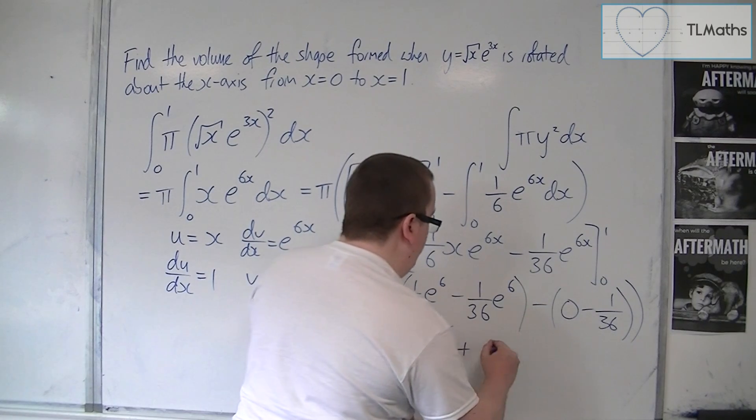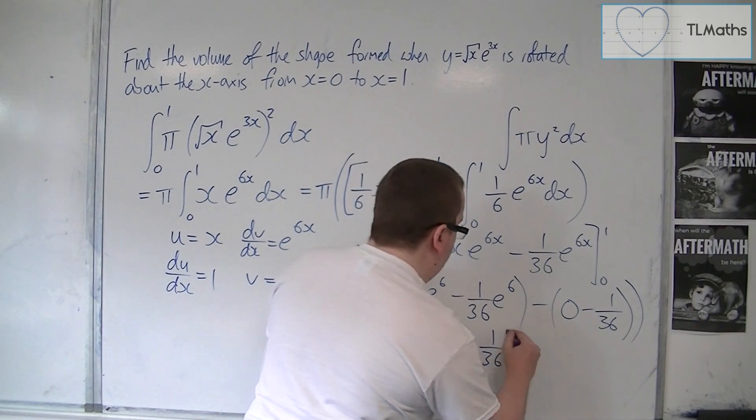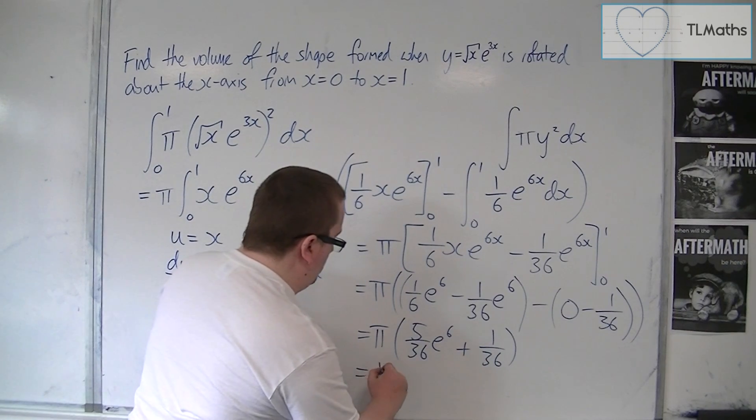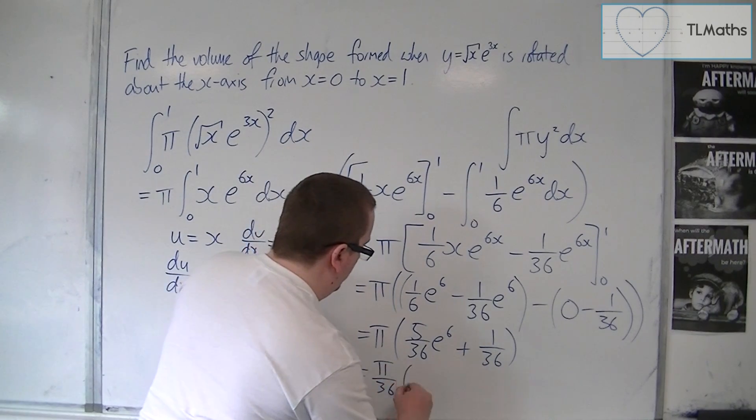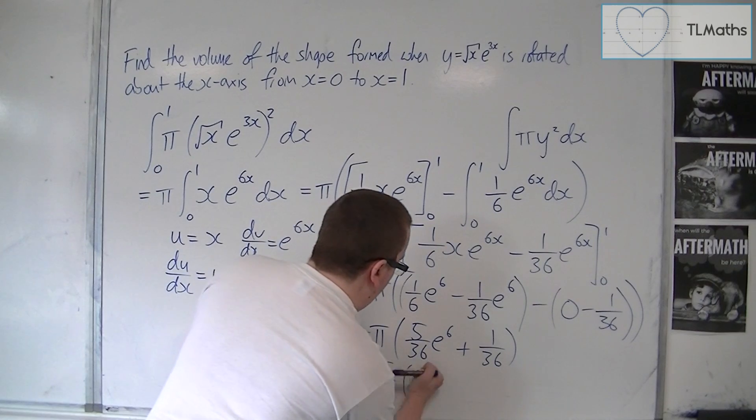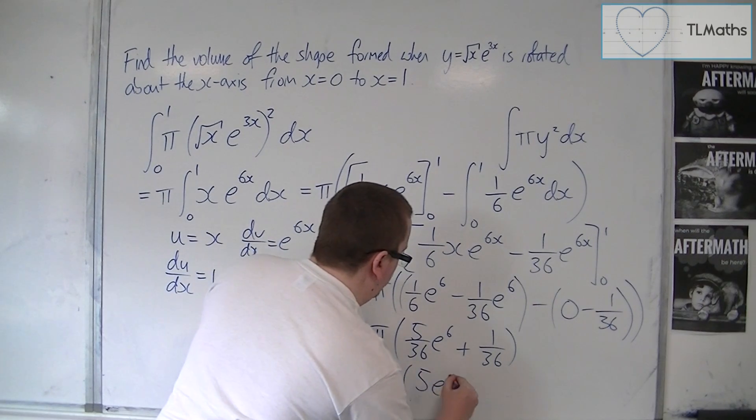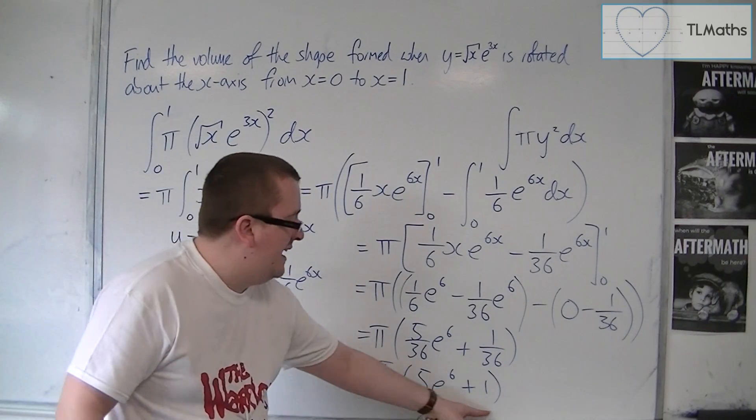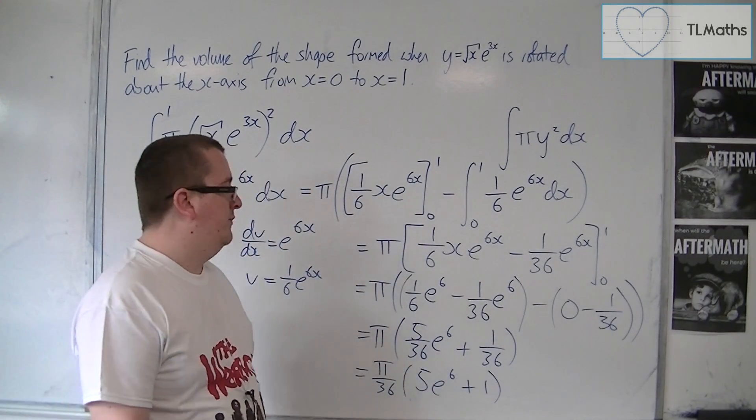And we're going to have this plus 1 over 36 left over there. I can factor out 1 over 36, so pi over 36 times, oh sorry, 5 e to the 6 plus 1. And that is the exact answer that I'm looking for here.